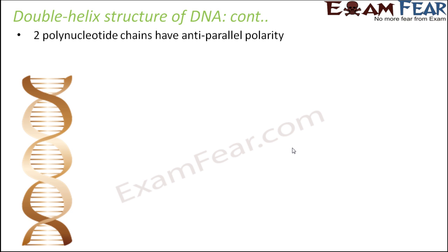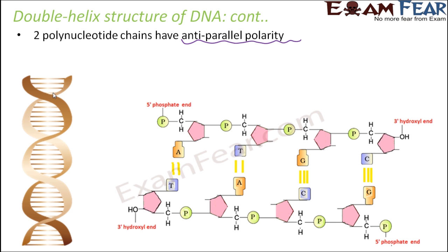The two polynucleotide chains have anti-parallel polarity — this is another important point. The double helix has two strands: chain one and chain two. These are the two chains forming the two strands of DNA, and here you can see that the bases are joined together by hydrogen bonds — the double bond and the single bond.